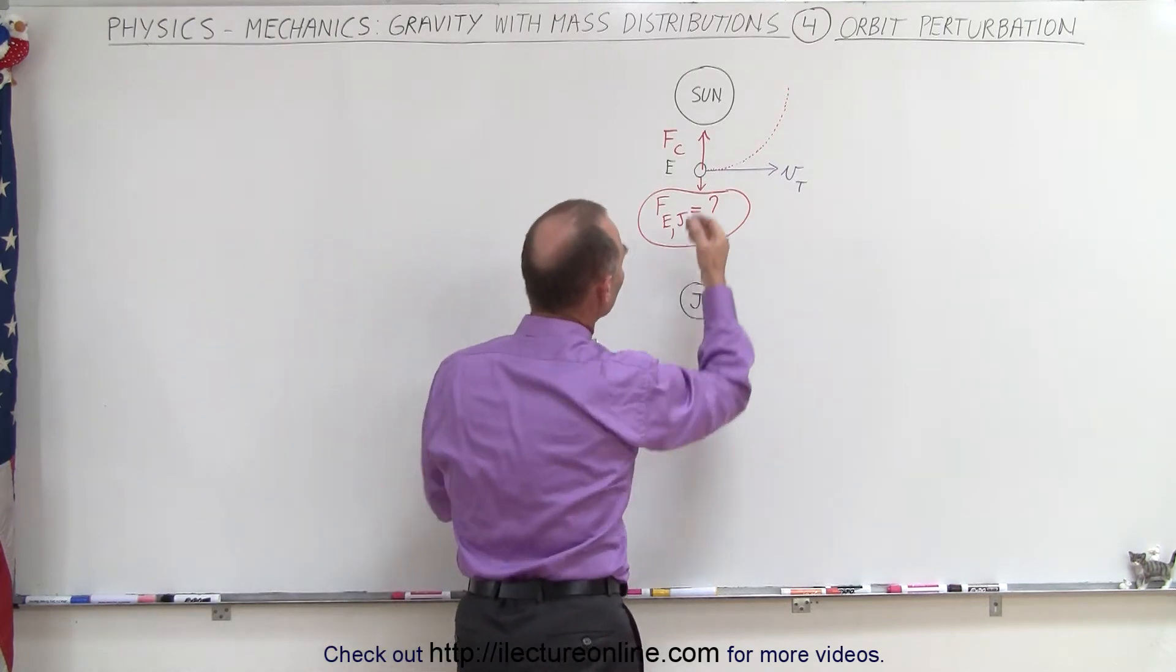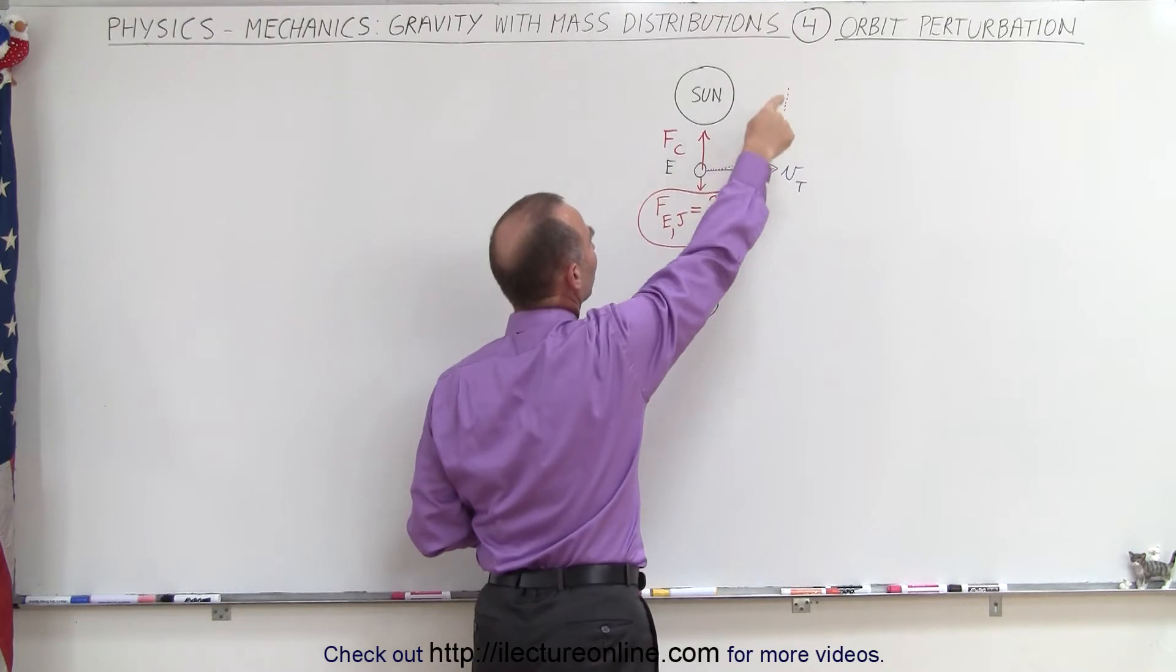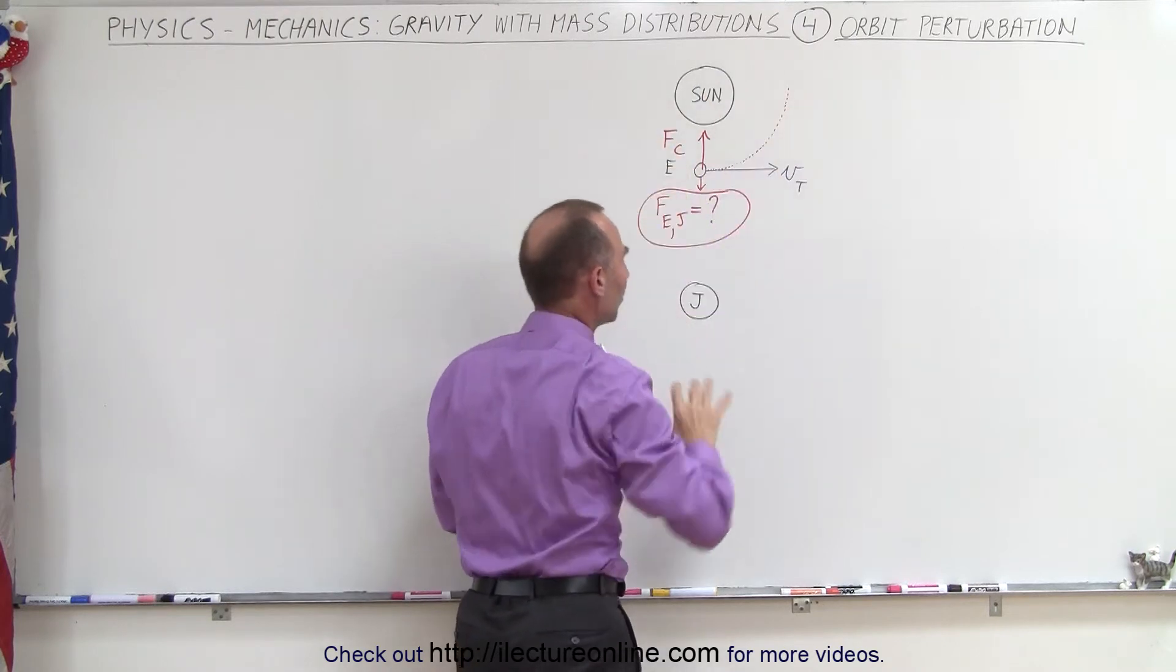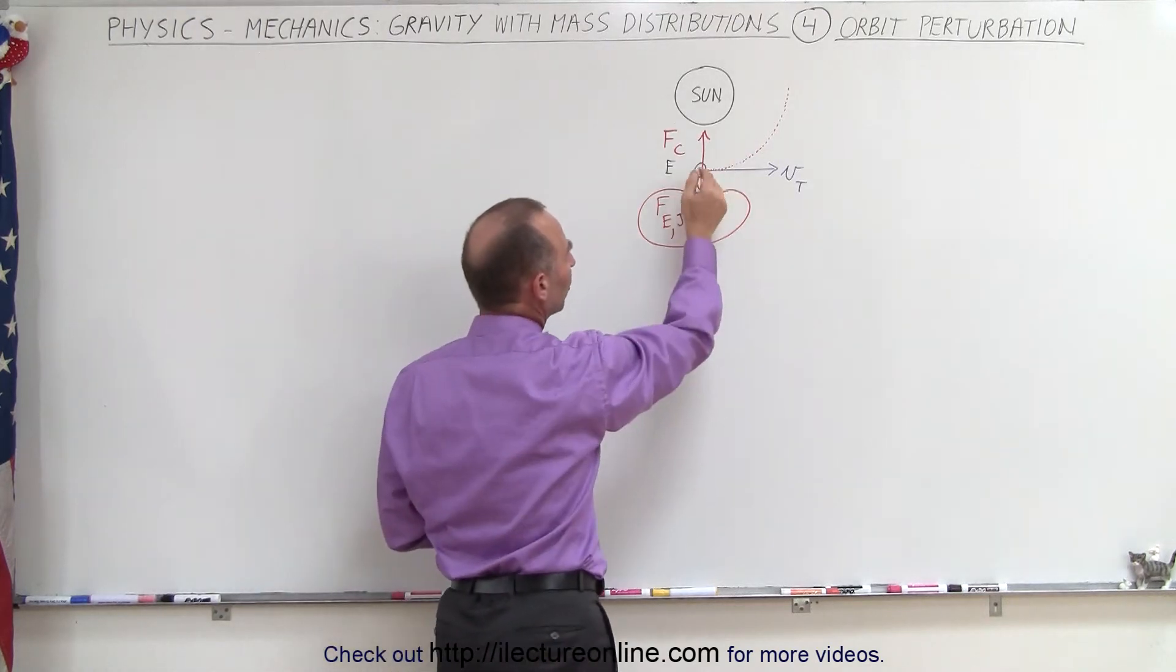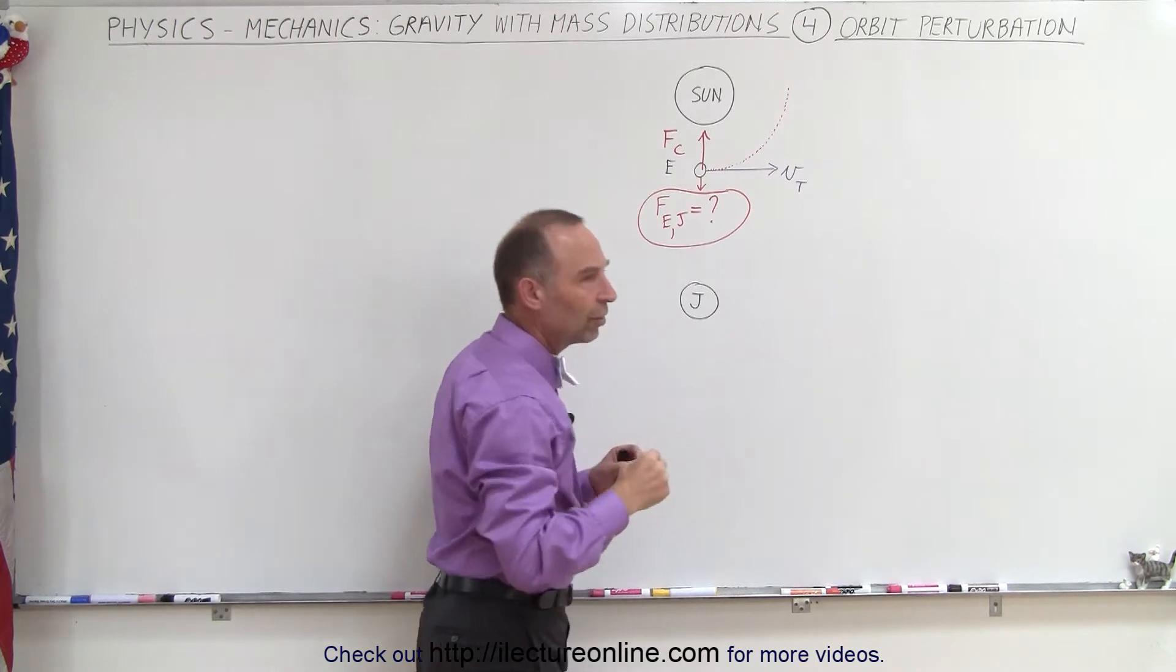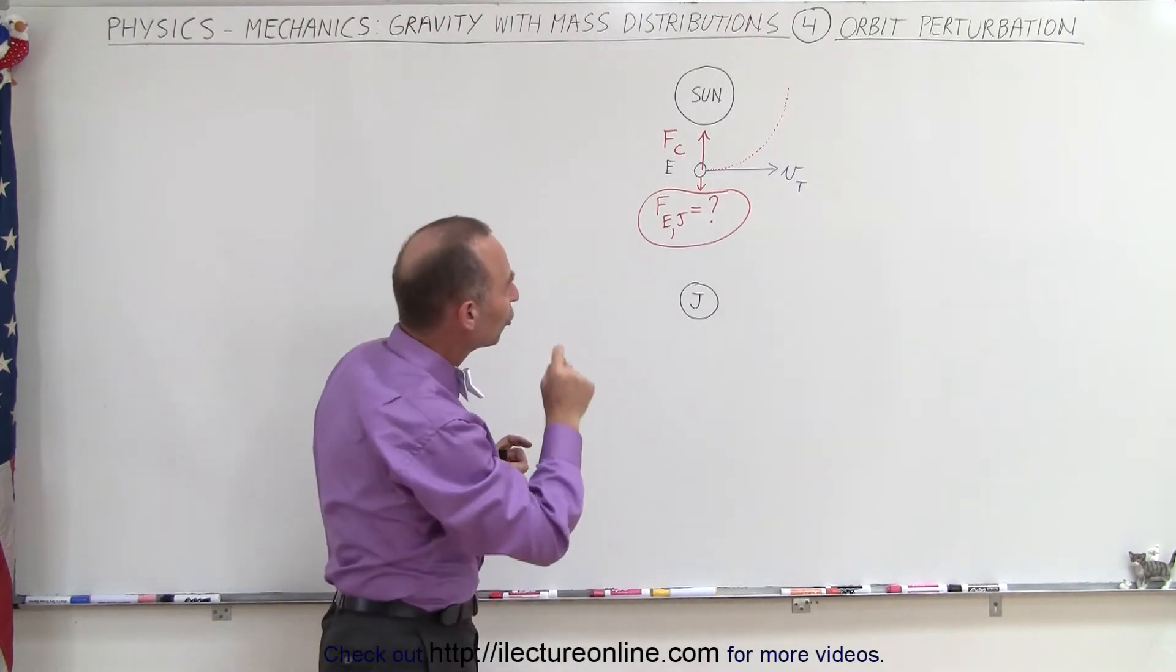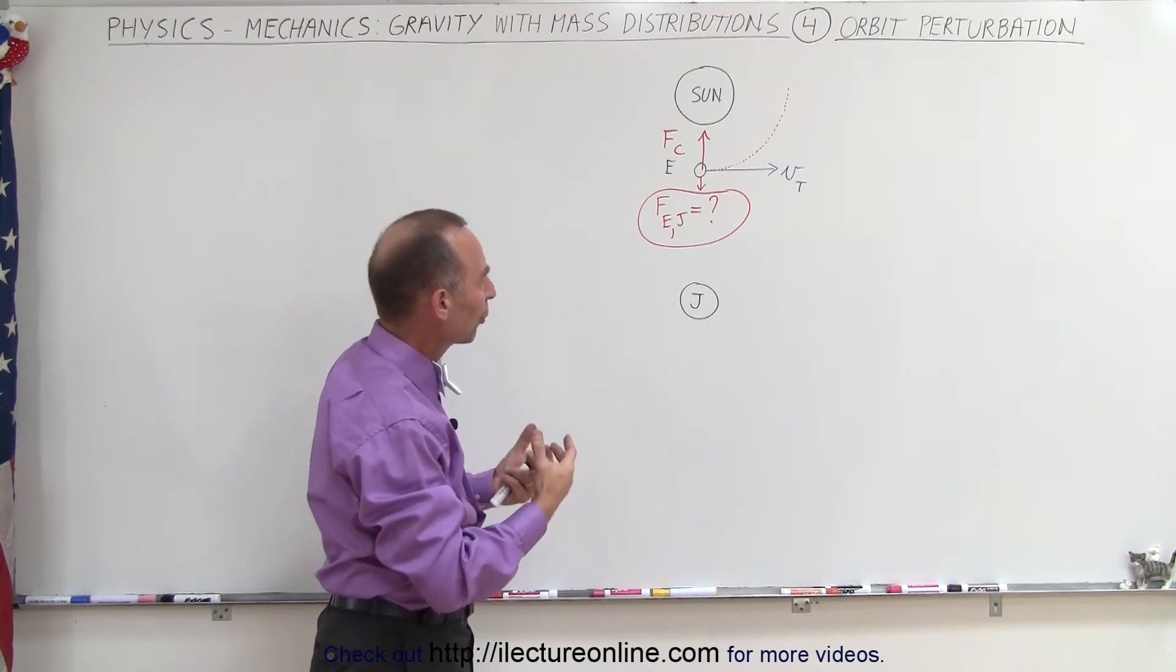And what happens when Jupiter is in that position, Jupiter also pulls on the Earth as well as the Sun. Now the Sun's gravitational force keeps the Earth in an orbital path around the Sun, which is nearly circular. But because Jupiter pulls on the Earth, it causes the ellipticity of the orbit to change periodically. And so that's what we call orbit perturbations.